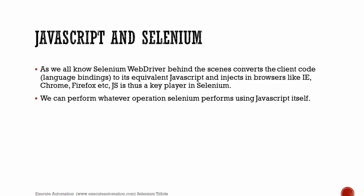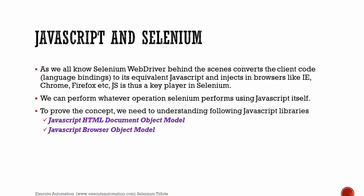We can perform whatever operation Selenium performs using JavaScript itself — identifying a control, performing an operation on it, or getting text. To prove this concept we need to understand two JavaScript libraries: the JavaScript HTML Document Object Model (DOM) and the JavaScript Browser Object Model (BOM). In this video we'll be focusing only on the DOM and BOM.